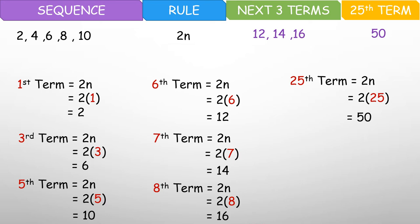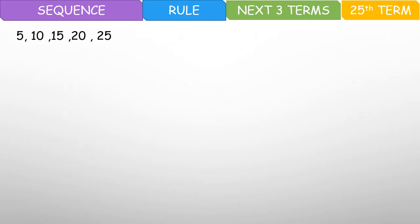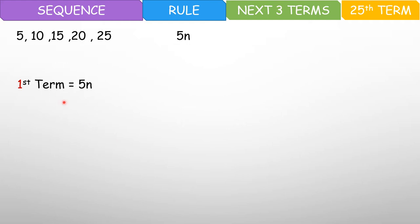Tignan natin yung next example. The sequence here is 5, 10, 15, 20, 25. So skip counting ng 5, diba? Ang dinagdag dito is 5. Tandaan yung sinabi ko — kung ano yung dinagdag, yun ang itabi mo sa n. So this is just 5n, diba? Check natin ulit. First term — palit natin yung 1 sa n. Kasi ang kinuha natin dito is first term. So 5 times 1, you have 5. So first term, ayan siya. Tama, diba?